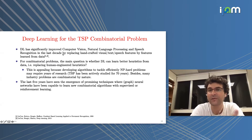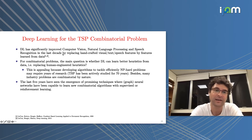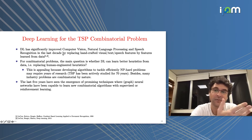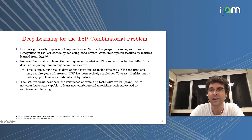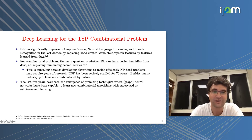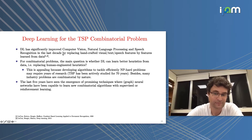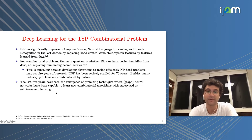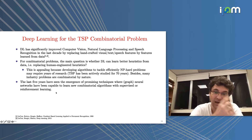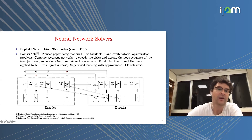Deep learning has significantly improved computer vision, natural language processing, and speech recognition in the last decade by replacing human-crafted features with features learned from data. For combinatorial problems the main question is whether deep learning can learn better heuristics from data, replacing human-engineered heuristics. This is very appealing because tackling NP-hard problems may require years of research, and many industry problems are combinatorial by nature. In the last five years we have seen an emergence of promising neural network techniques able to learn combinatorial problems with supervised or reinforcement learning.